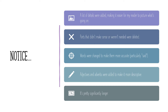With the revision, I want you to notice these five things. I added a lot of detail to help my reader visualize what's going on. I got rid of things that didn't make sense or weren't needed in the story. In some cases, I changed words to make them more accurate or more specific — particularly 'said'. There are a lot of different words you can use that explain how someone says something, like they exclaimed it, or they shouted it, or they muttered it. All of those different words convey a different way the character is speaking. I added adjectives and adverbs to make it more descriptive, and it's pretty significantly longer.